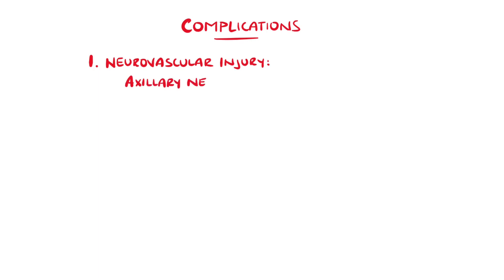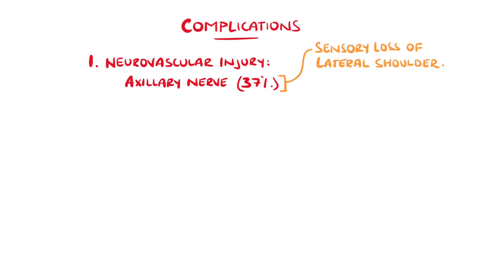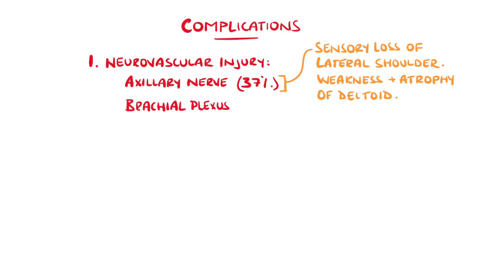The axillary nerve is injured in nearly 40% of anterior dislocations, which can lead to sensory loss on the lateral aspect of the shoulder, as well as weakness and atrophy of the deltoid. The brachial plexus and axillary vessels may also be injured due to their proximity.